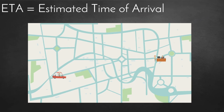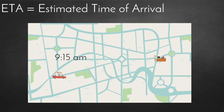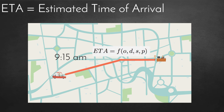We consider the path-based method, with origin O, destination D, starting time S, and the planned path P. The ETA can be obtained from a regression model.